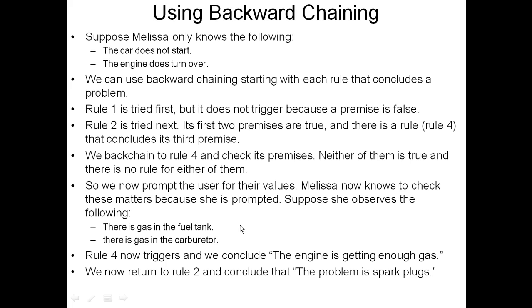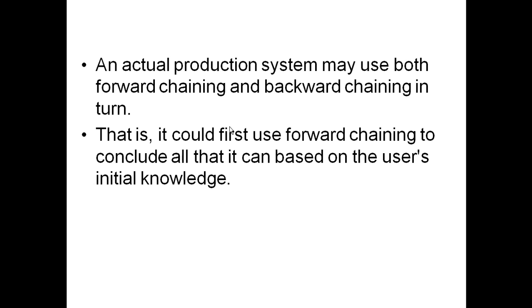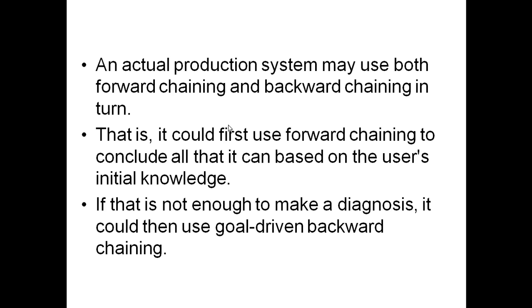We return to rule two and conclude that the problem is spark plugs. Both algorithms work to solve the problem, but in different ways. With forward chaining, Melissa needs to know everything up front. Backward chaining is more useful because she can put in what she knows — it could be nothing even — and the important thing is it will ask her questions. That's the strength of backward chaining. An actual production system may use both forward chaining and backward chaining in turn: it could first use forward chaining to conclude all it can based upon the user's initial knowledge, and if that's not enough to make a diagnosis, it then uses goal-driven backward chaining.